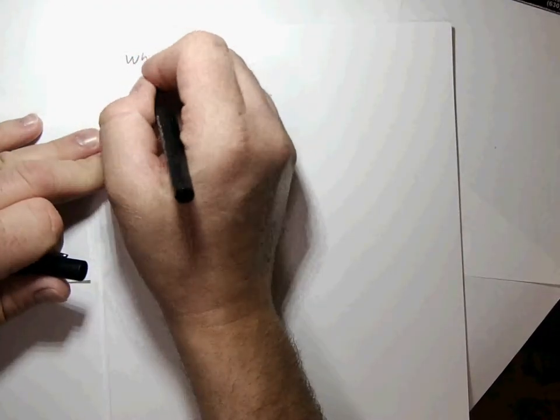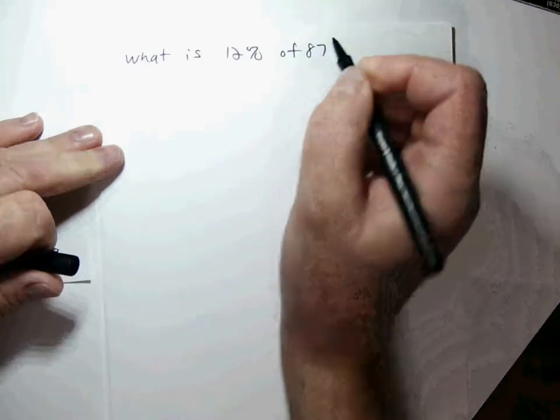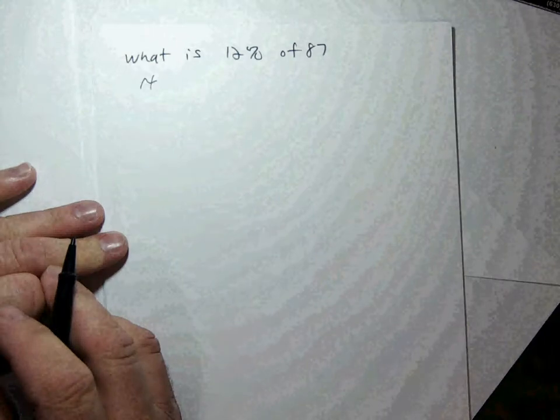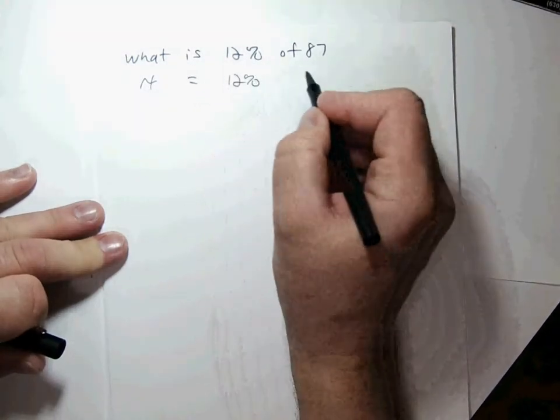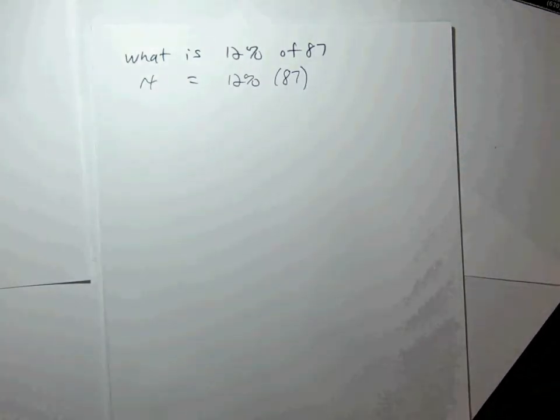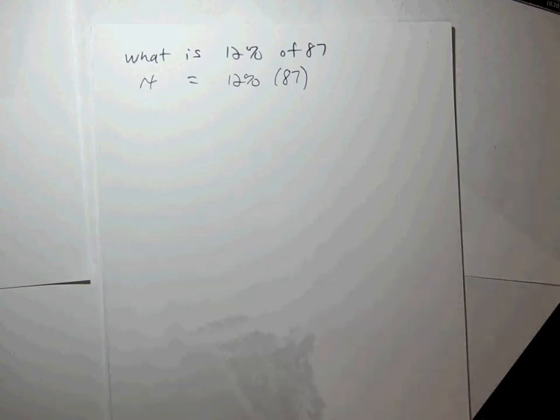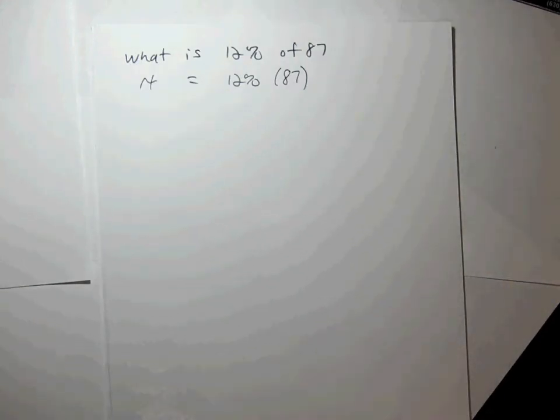Up until now we haven't really had any letters of the alphabet involved too much in our problems. Now we're going to formally look at those equations. When we did the percent problems — what is 12 percent of 87 — we translated that into an equation. We said 'what' is my unknown, I call it x, 'is' means equals, 'of' means times. That was algebra, and it was much easier than the whole PBR formula with pie charts.